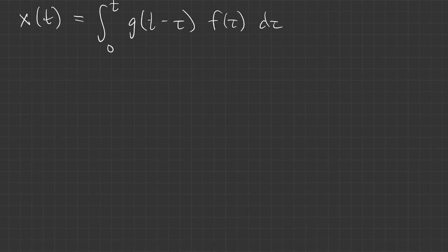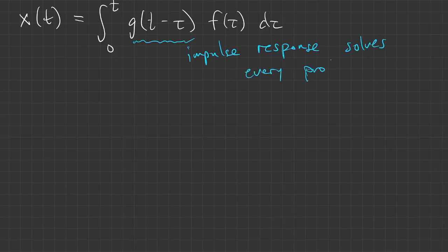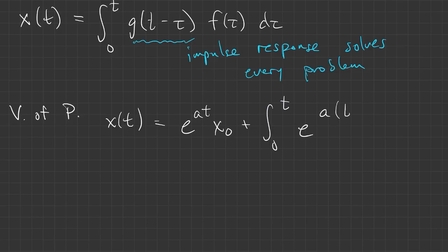So we have that we can write the solution of our differential equation as a convolution integral. In a sense, then, the impulse response actually tells you how to solve every problem. And when we did variation of parameters in the first order problem, I'll just write it out for the scalar case, but it's very similar for the vector case. This formula is already in that form, with the integral there. And in fact, this exponential was the impulse response of the first order problem.